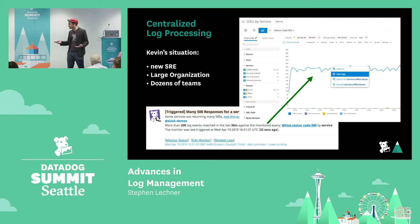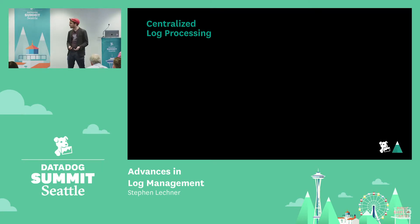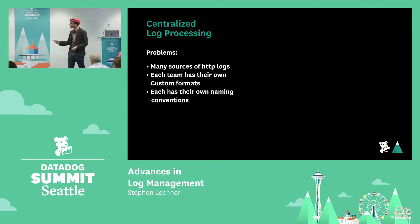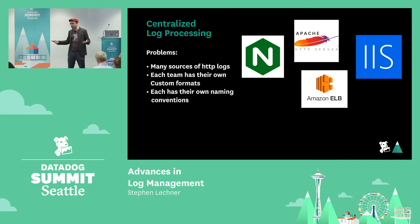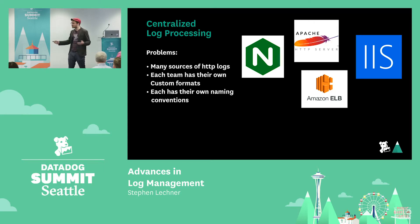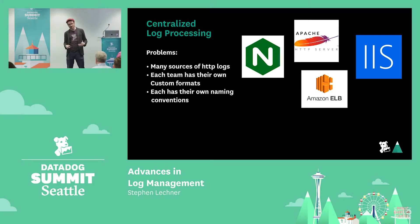The first problem: there are many sources of HTTP logs. Any number of teams at a large organization could be using NGINX, IIS, Apache, or any number of others. These all have their own syntaxes for logging HTTP events, so you can't really expect to query all of them the same way and end up with the right HTTP status code results.